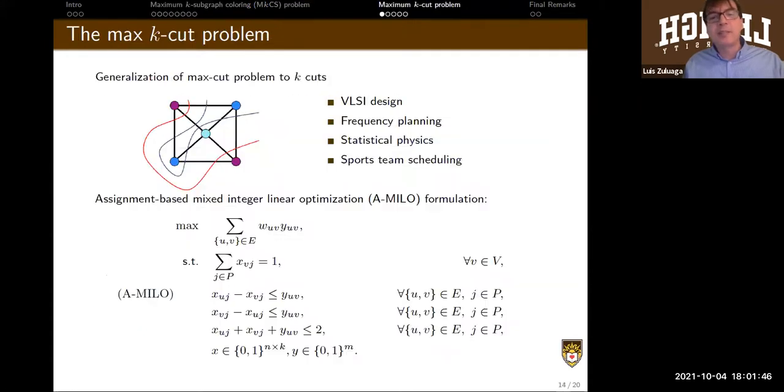These are similar results. Now you have a good idea of the type of results that I'm finding. We have similar results for the max k-cut problem. This is a generalization of the max cut problem, in which instead of two cuts, I might look for three, four cuts. It also has many applications in practice. As you can see, this is also a constrained combinatorial optimization problem.